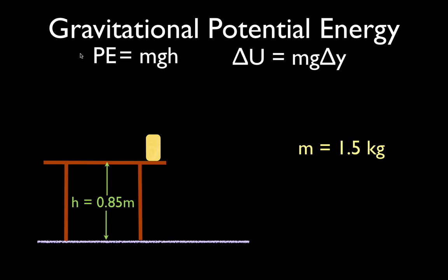You have probably seen this equation before, especially if you've taken 8th or 9th grade science: PE equals mgh. I just want to point out that the official symbol for potential energy is not PE — the official symbol for potential energy is U, capital U. Capital U, the potential energy, is equal to the mass times the acceleration due to gravity times the height of the object.